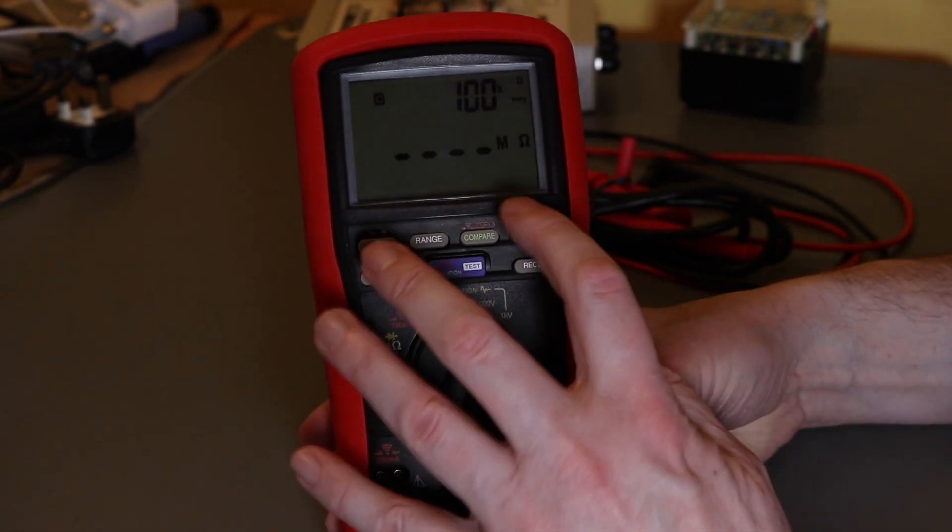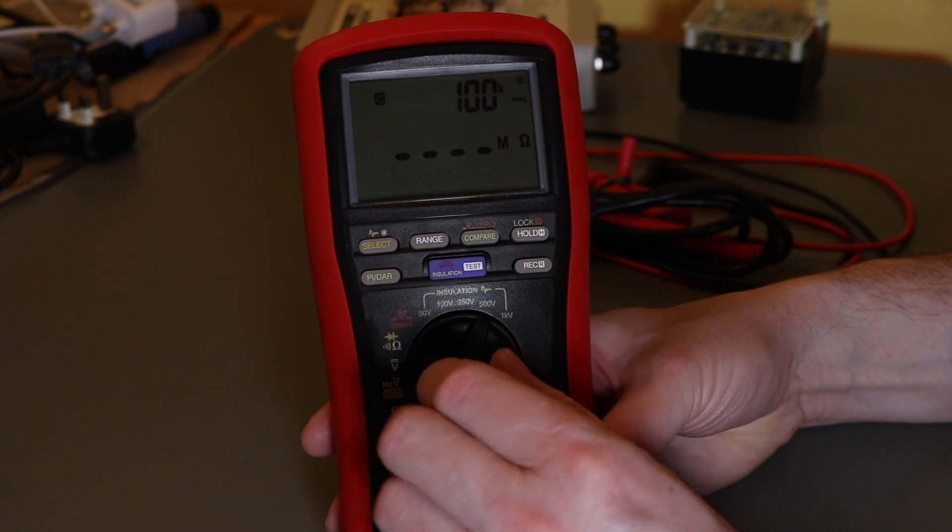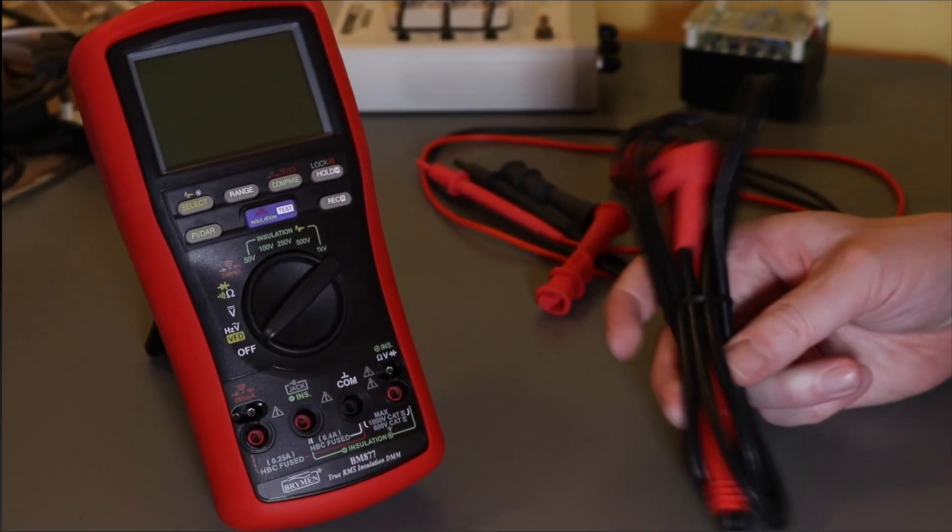So that compare function changes depending on the voltage you actually select. So with the kit you get a remote probe that works in either the insulation function or the 200 milliamp earth bond test.